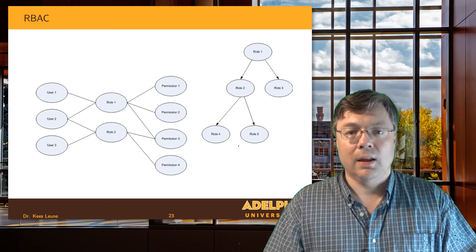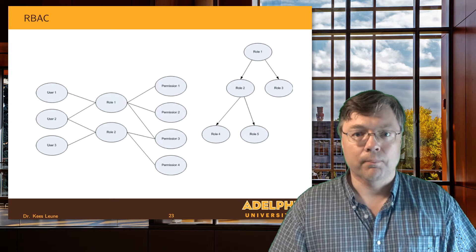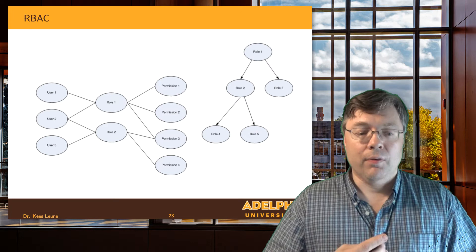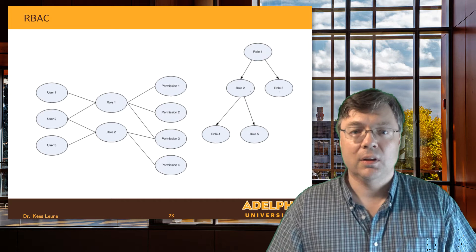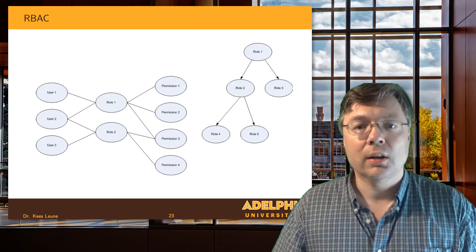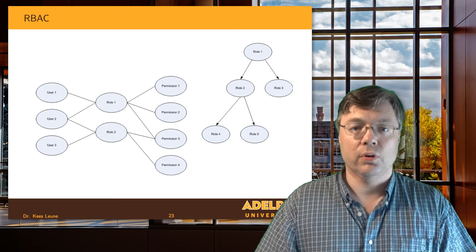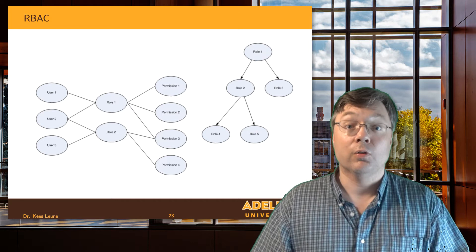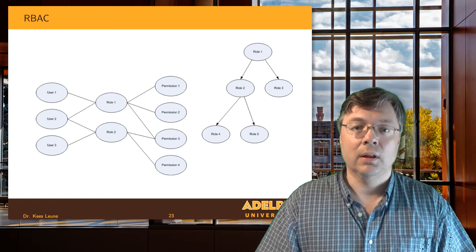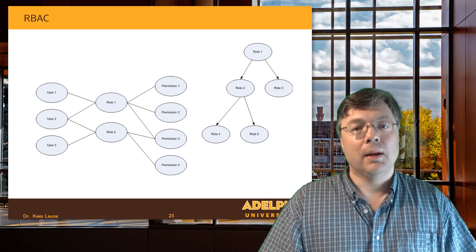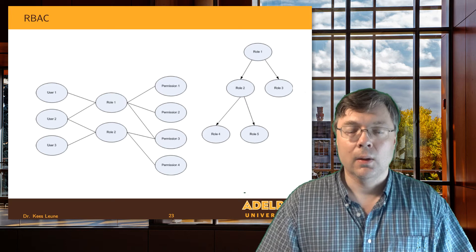Because we can define constraints between roles, we can now express very easily in policy that someone cannot be their own student — a capability we didn't have before. By organizing roles in hierarchies and defining constraints between them, we gain additional expressive capabilities that weren't previously available.